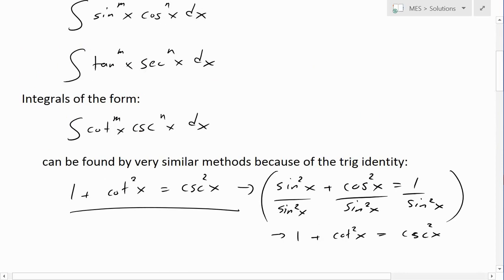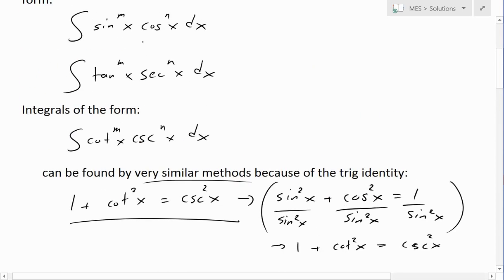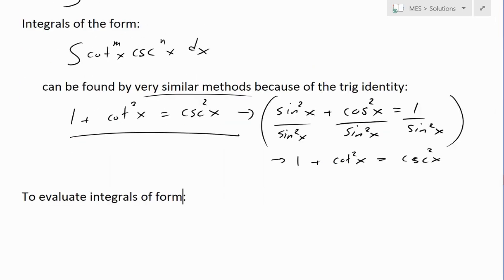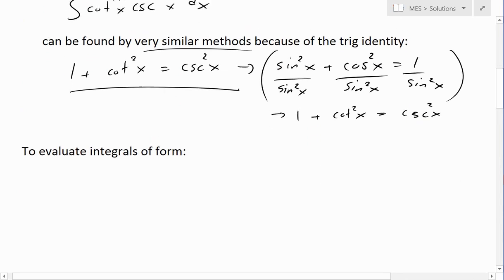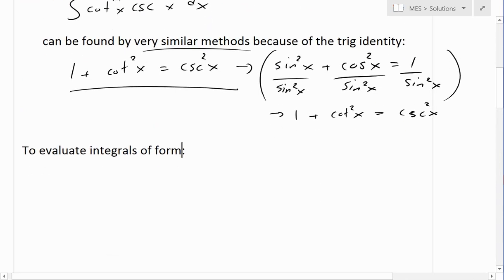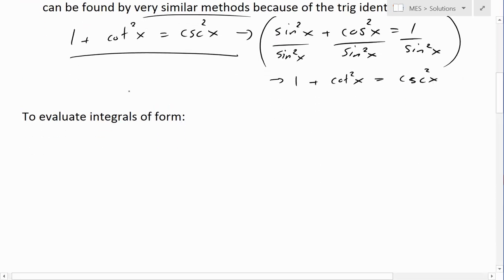So that's the proof for this identity right here. I'm not going to cover these because it's again very similar to these, but we're going to be using this instead. Now to get back to our example, basically to evaluate integrals of the form, we're going to have three types of it that are similar.